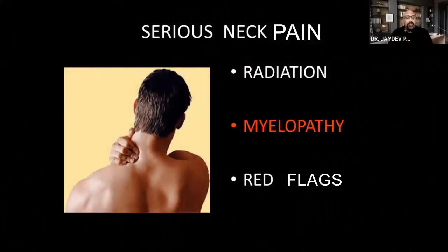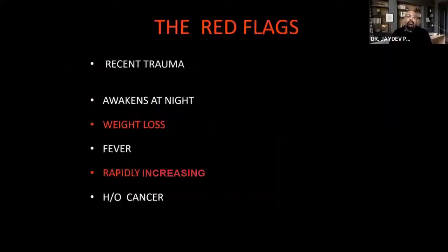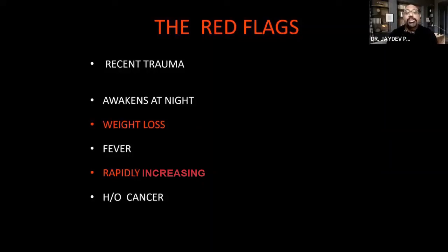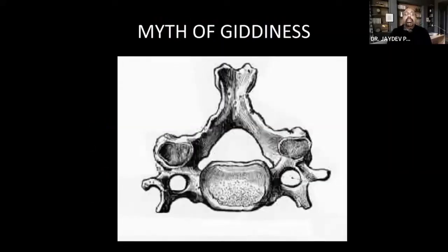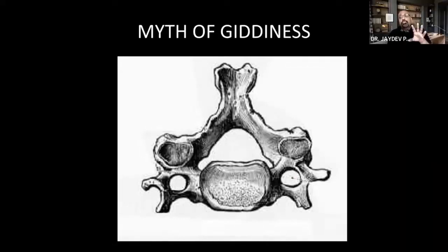Red flags for radiculopathy and myelopathy include: recent trauma, neck pain that awakens the patient at night, associated weight loss or fever, rapidly increasing severity, history of cancer, or an immunocompromised state. Regarding giddiness — long associated with cervical spondylosis — this occurs because the vertebral artery passes through the foramen transversarium, and a large osteophyte compressing it in a particular neck position can reduce blood supply to the brainstem, causing dizziness.